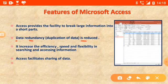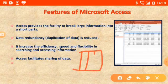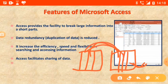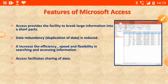Data redundancy is reduced, meaning duplication of data is reduced. For example, suppose we have two tables — one with the student's name, father's name, and mother's name, and another with the student's marks. In the second table, we do not need to write the mother's and father's names again. We simply link both tables, and in the report, all information including names and marks will appear automatically. So we do not need to duplicate data in another table.